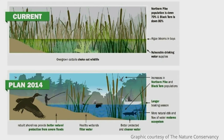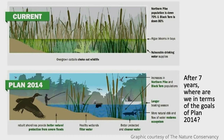A big push for changing the water level regulation plan from Plan 1958 DD to Plan 2014 had to do with how creating a more natural level of fluctuation could help restore these wetlands that had become choked with cattail. The idea was that increased natural fluctuations would lead to a decrease in cattail, an increase in pike using meadow marsh for spawning, and muskrats returning. These were hypothesized to happen when the plan went into effect in 2017, but we still need to know where we are seven years after the plan was enacted.